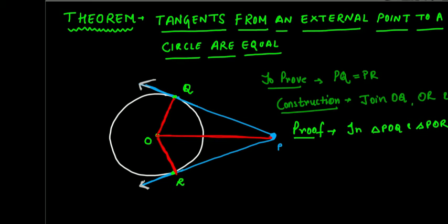In triangle POQ and POR, can we say that OQ is equal to OR? Obviously, because they both are radii of the same circle. So we can mark these two as equal.